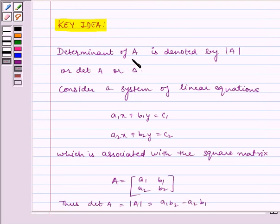Determinant of A is denoted by |A| or det A or delta. Consider a system of linear equations a1x + b1y = c1 and a2x + b2y = c2 which is associated with the square matrix A equal to [a1, b1; a2, b2].